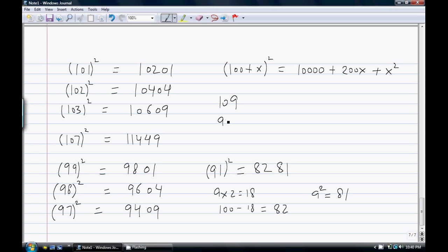Similarly, for 109, 9 times 2 is 18, so that will be 11881. You see that these last two digits are always the same, but in this case we are adding 18 to the 100, and here we are subtracting 18 from the 100. So that concludes this.